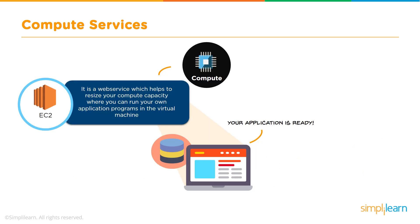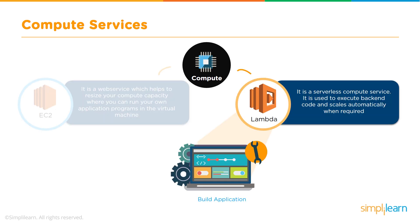We're going to talk about two compute products specifically. EC2 is a service with resizable compute capacity in the cloud that allows business subscribers to run application programs in a computing environment. The best part is that EC2 is resizable — anytime there is more demand, I can simply resize to meet the demand. Lambda, on the other hand, is a serverless compute service used to execute back-end code, helping us focus on core competencies like application development.